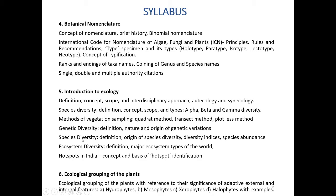Next, we cover species diversity — its definition, origin of species diversity, diversity indices, and species abundance — followed by ecosystem diversity, including definition, major ecosystems and types of the world, and hotspots in India with the concept and basis of hotspot identification.